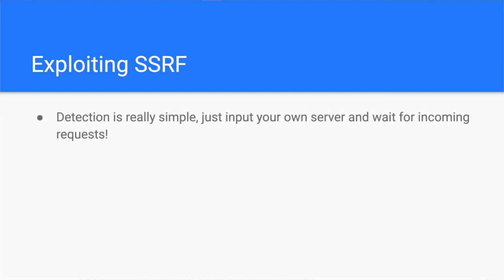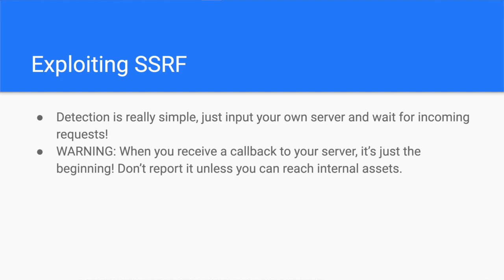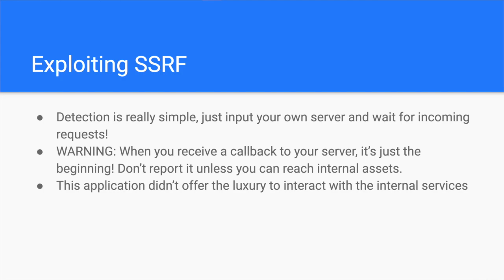To exploit this SSRF in this application, I simply put my web server's hostname in the migration server input. Upon hitting the Next button, I received an HTTP callback. This means the application takes the hostname input and initiates an HTTP request to a server of my choice. But what is the impact here? Receiving a callback is not necessarily a security issue unless the server discloses sensitive data in the request. It's important to test if you can reach internal assets — services which are not directly exposed. Unfortunately, many bug bounty hunters fall for this mistake and their reports get closed as not applicable or informative. In the case of this web application, I get different error messages depending on whether there is a service running or not, but I can't interact with those services — so this SSRF is not really impactful on its own.